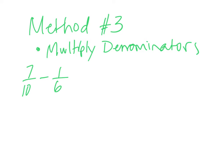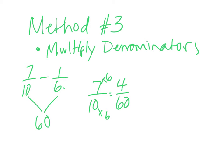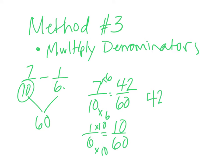Method three: just multiply the denominators. Ten times six is sixty. Seven tenths equals how many sixtieths? Multiply by six — the answer is right there — forty-two sixtieths. One sixth equals how many sixtieths? Multiply by ten — the answer is right there — ten sixtieths. Now we have forty-two sixtieths minus ten sixtieths.